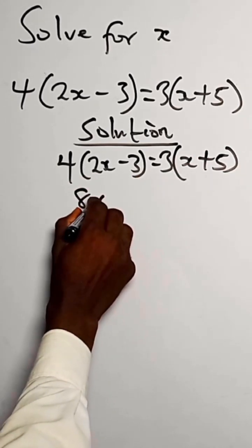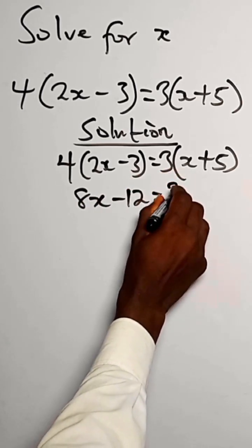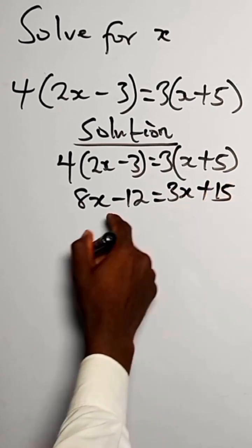4 times 2x is 8x. 4 times 3 is 12. 3 times x is 3x, plus 3 times 5, we have to be 15.